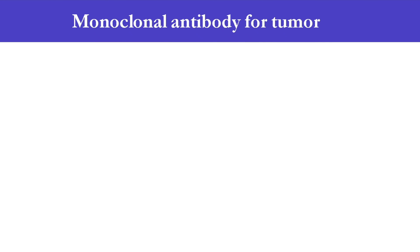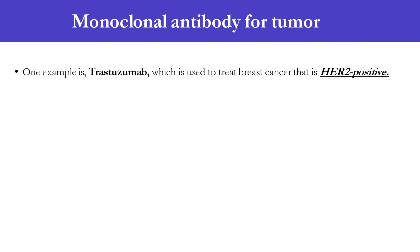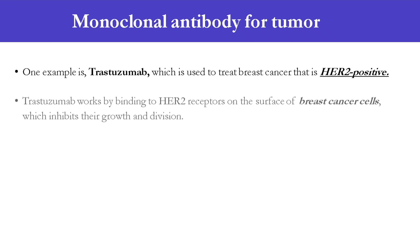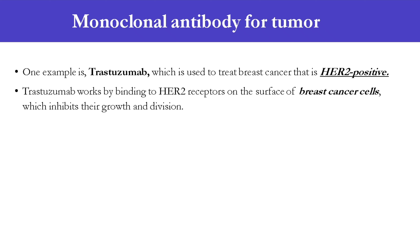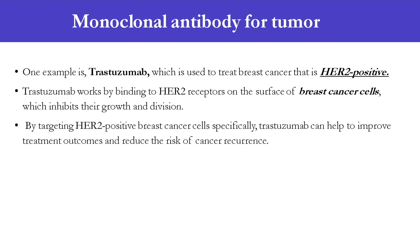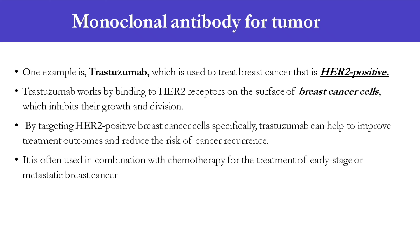One example of a monoclonal antibody for tumor targeting is trastuzumab, which is used to treat breast cancer that is HER2 positive. Trastuzumab works by binding to HER2 receptors on the surface of breast cancer cells, which inhibits their growth and division. By targeting HER2-positive breast cancer cells specifically, trastuzumab can help to improve treatment outcomes and reduce the risk of cancer recurrence. It is often used in combination with chemotherapy for the treatment of earlier stage or metastatic breast cancer.